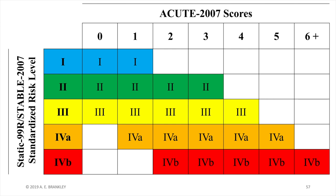The colored cells in the middle represent scores on acute that are expected at that risk level. Going back to the weather analogy, static-stable risk levels are the air temperature, and acute is the relative humidity and wind speed. The colored cells are situations where the humidity and wind do not significantly impact your experience of the air temperature. For extreme cases - represented as the white cells - rather than assigning new risk levels (which would lead to rapid fluctuations), we simply say that the risk is higher or lower than would be expected.